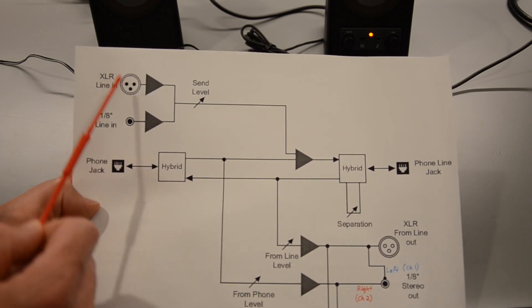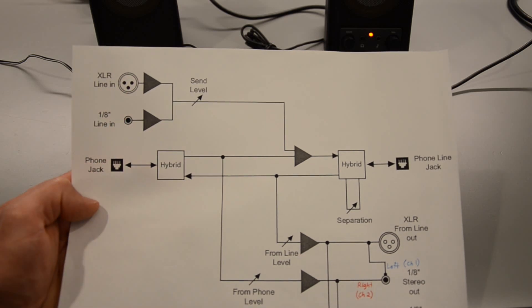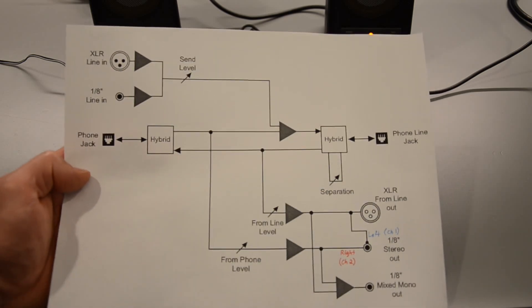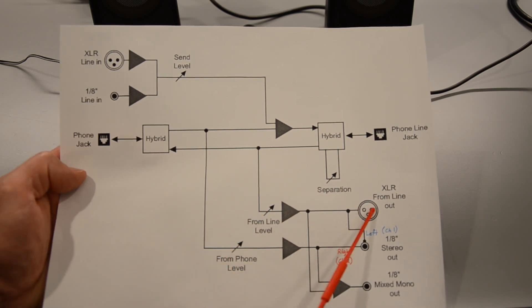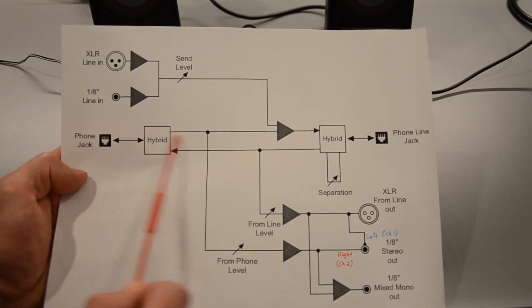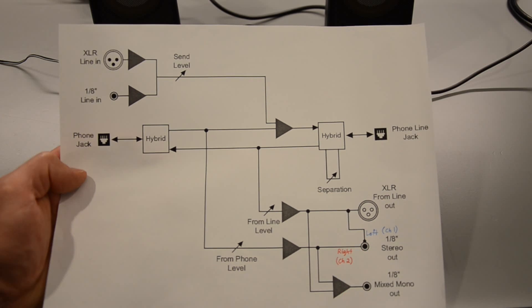To send audio onto the phone line, you can do so at either of these interfaces here, and to pull audio off of the interface, you can go through this path which comes from the phone line, or through this path which comes from the connected phone.